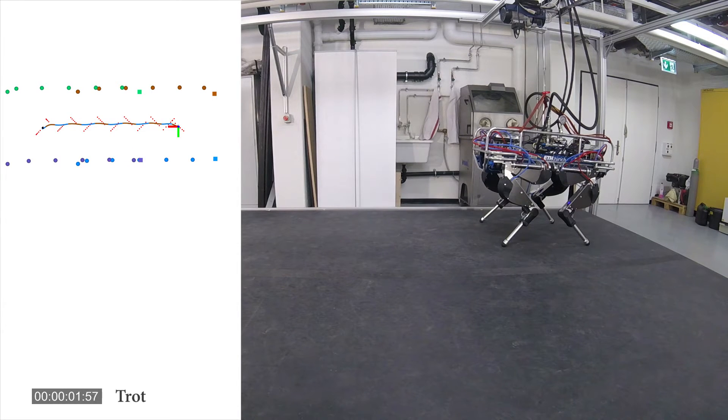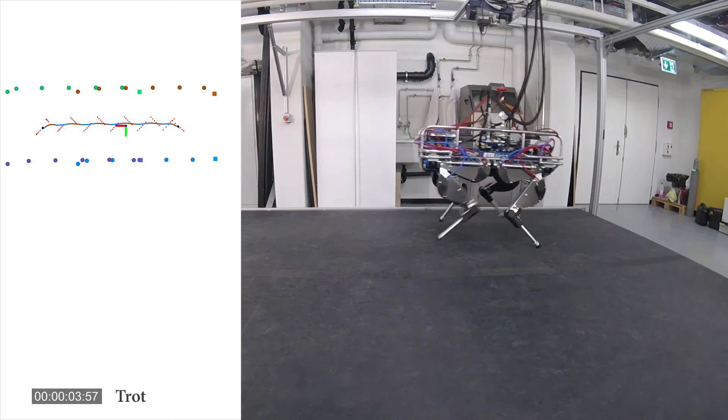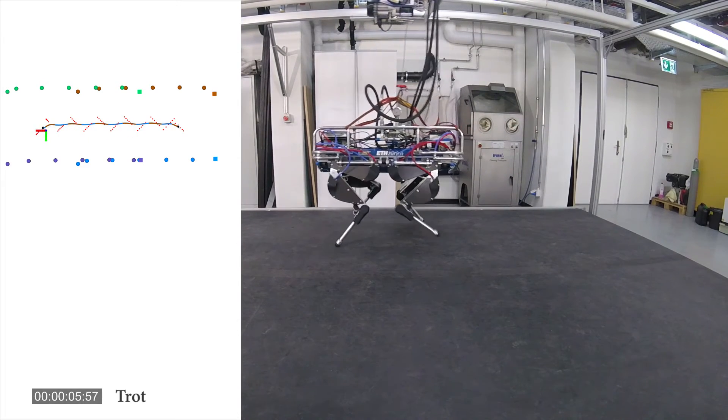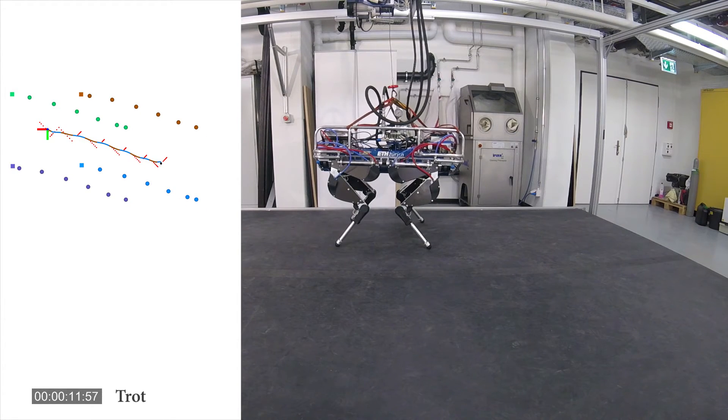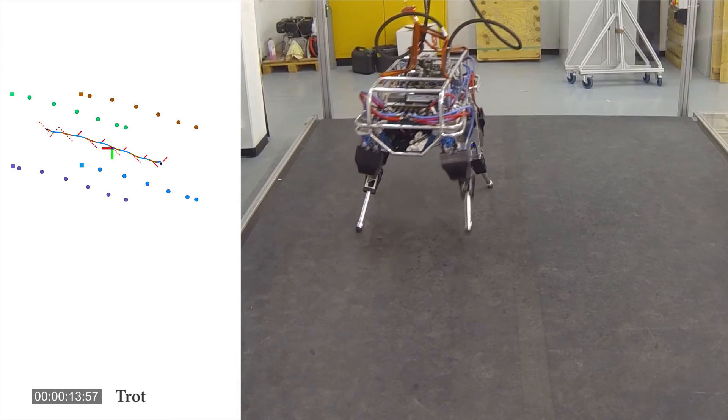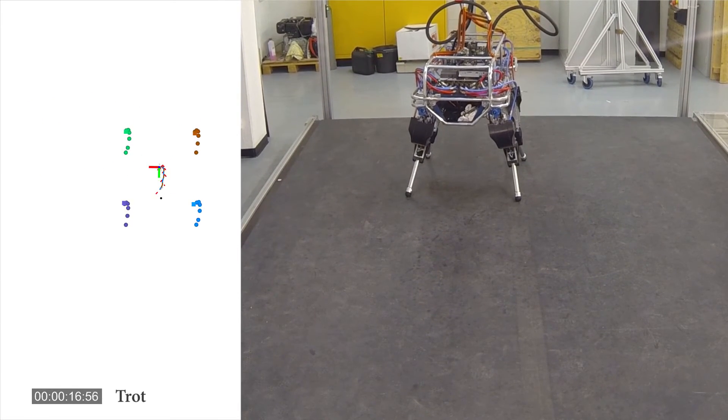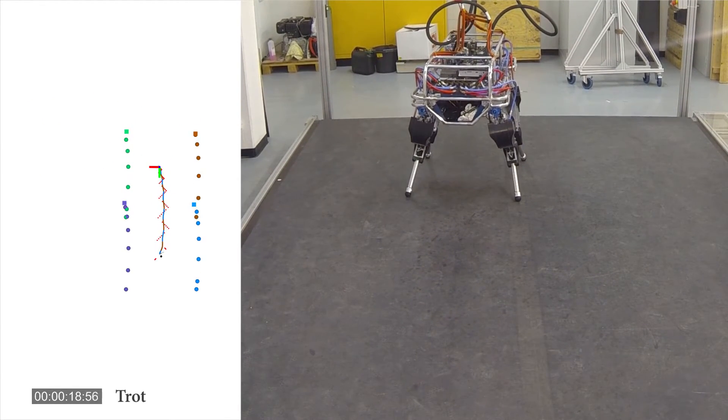Finally, we show that motions generated by the optimizer can also be executed on real hardware. We use the initial state of the system as given by the IMU and vary the goal state and contact sequence to reach it. The optimizer plans the body and end effector motions, seen in the top left in real time.